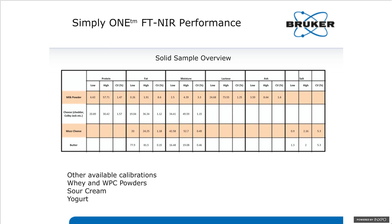Looking at solid samples, for the milk powder calibration the protein has a CV of 1.4, fat of about 8.5 — this is nonfat dry milk so fat values are quite low. Moisture CV is 3.3%, lactose 1.25%. These are measured using either glass or polystyrene petri dishes. In the case of butter, you can just put it on a piece of plastic wrap on top of the instrument and run it as-is. It's very flexible in switching back and forth between liquids and solid samples.